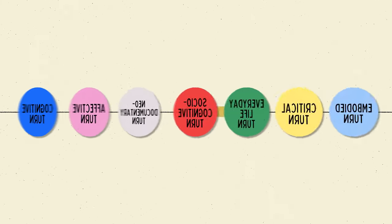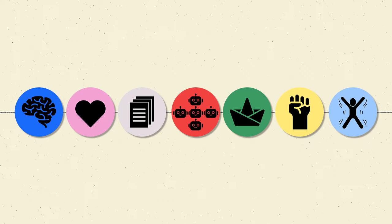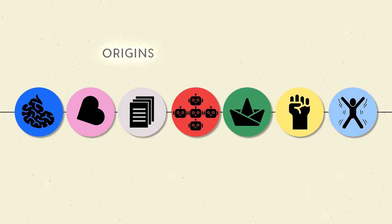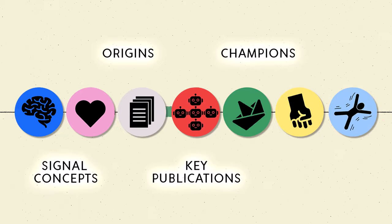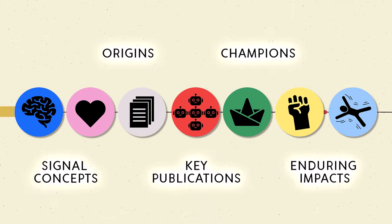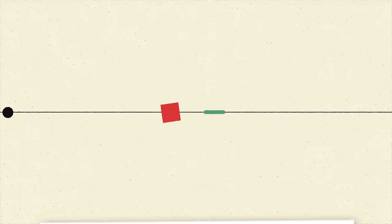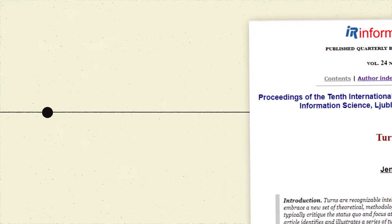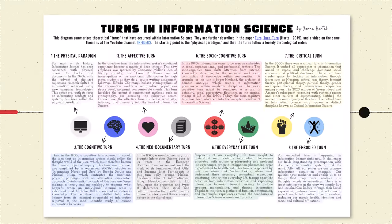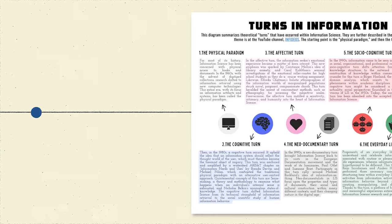Each turn is assigned a visual logo, and each turn is profiled with attention to its origins, champions, signal concepts, key publications, and enduring impacts. You may follow along with my paper, 'Turn, Turn, Turn,' or this more graphical timeline and map. Both are linked below. Let's go!